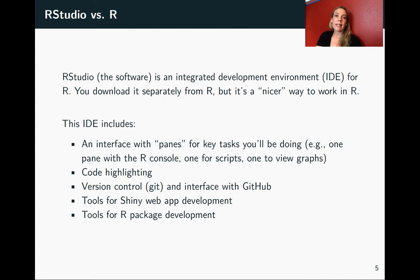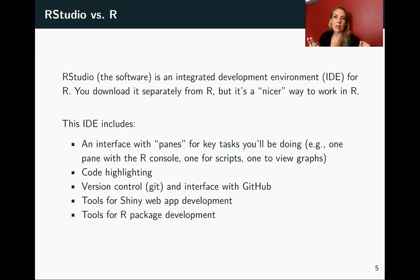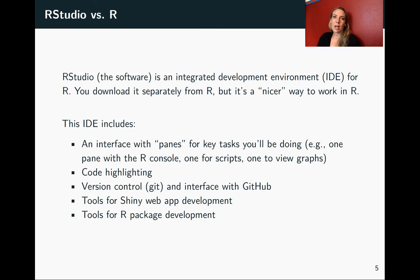RStudio is what's called an integrated development environment, or an IDE. You download it separately. This IDE includes things like an interface with different panes you can work with — ones for the R console, a different one for scripts, and a different place where you can look at your figures as you create them. It also does code highlighting, so instead of having all your code written in the same color of text, it uses different colors for different elements, which helps you quickly identify different parts and read through your code more quickly.